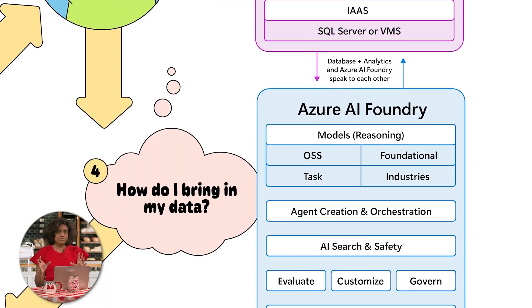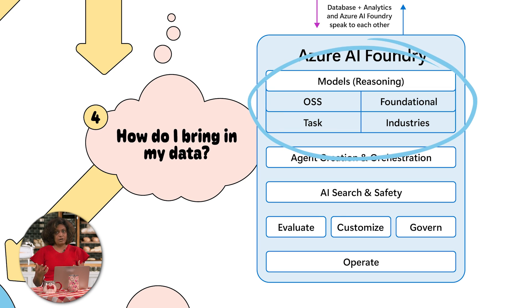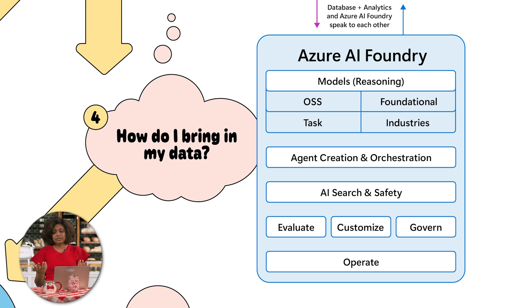We've got thousands of options in Azure AI Foundry, which is the umbrella platform you're going to use for all your AI-related needs. First is the model choice: open source models, foundational and frontier models that Microsoft has built, and task-based and industry-specific models. You pick one or a few based on your task and use case. Then you need to think about the creation and orchestration of your agent — agent orchestration is a part of Foundry, and you can build agents through API or a graphical user interface and connect them together for specific tasks.